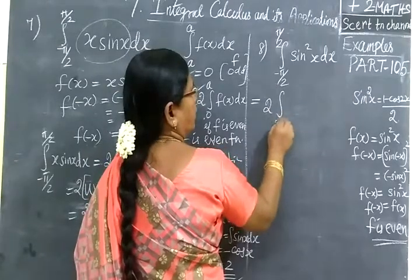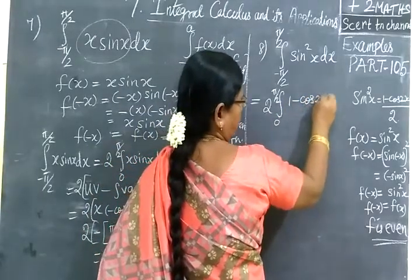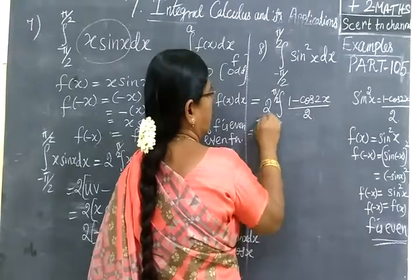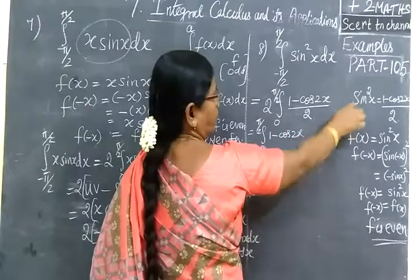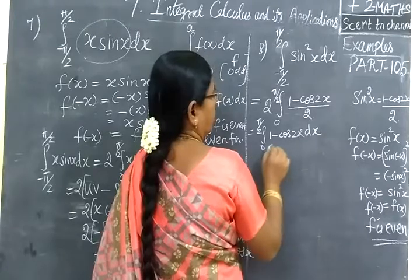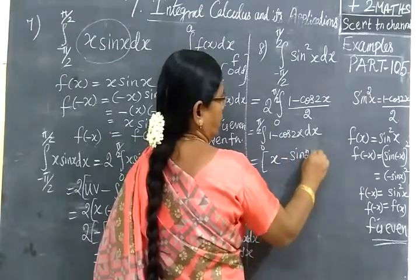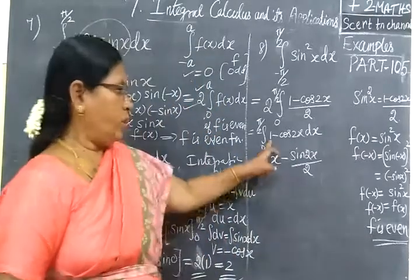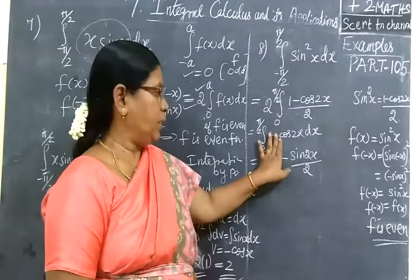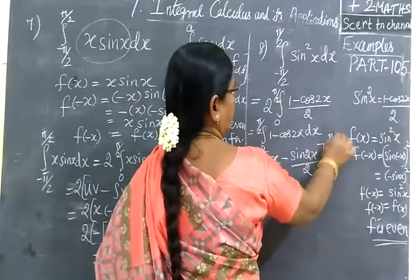The next integral is from 0 to 5π/2 of sin²(x) dx. We use the formula sin²(x) equals (1 minus cos 2x) divided by 2. Integrating: x minus sin(2x)/2, evaluated from 0 to 5π/2.